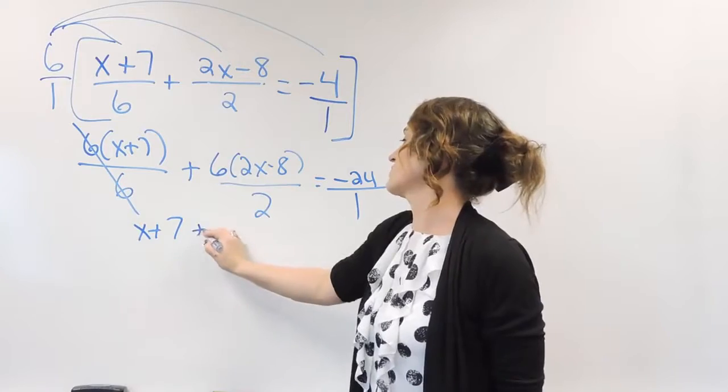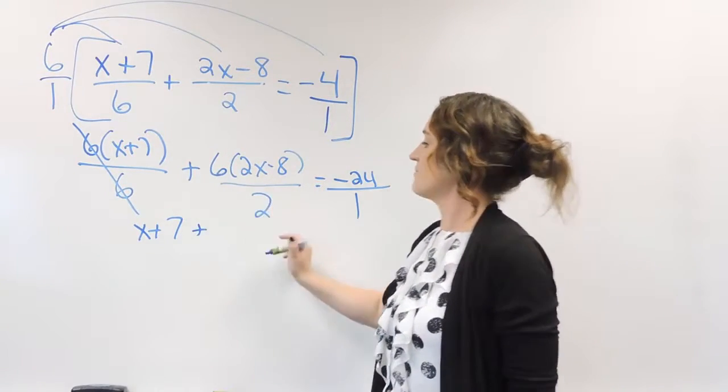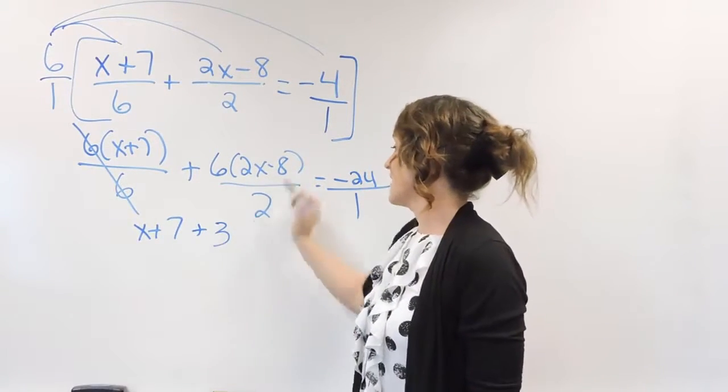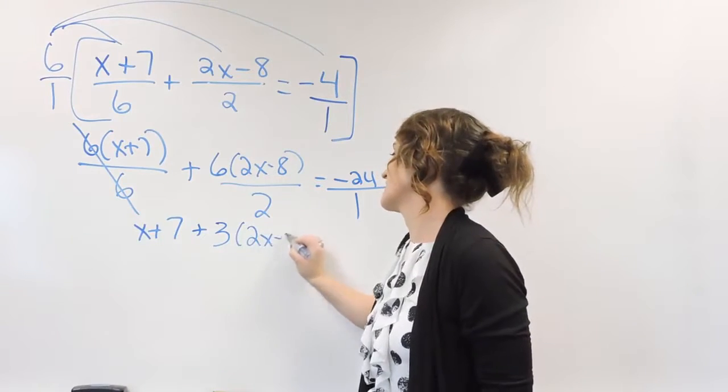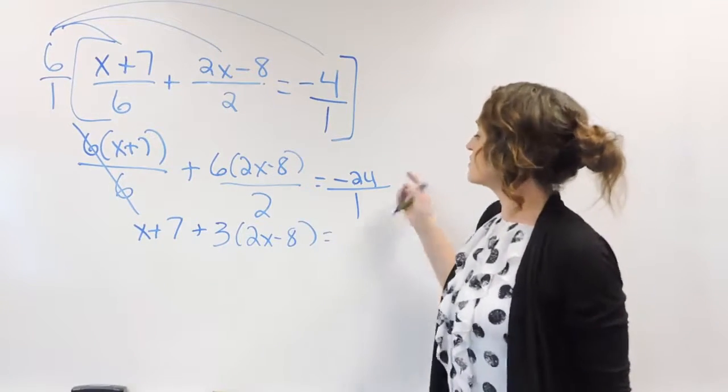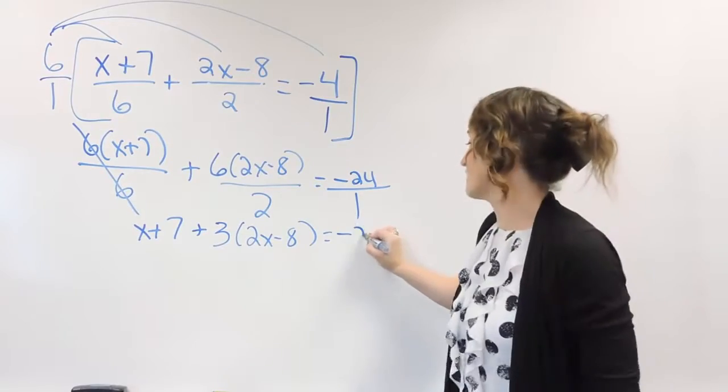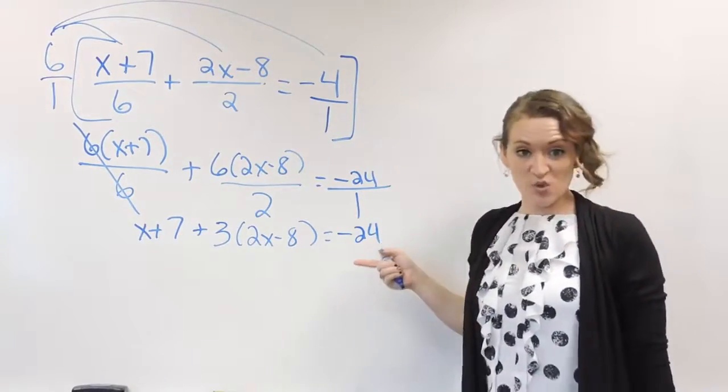Then over here, drop down your plus sign, 6 divided by 2 is 3, and drop down the 2x minus 8, is equal to 24 divided by 1, or negative 24 divided by 1 is negative 24.